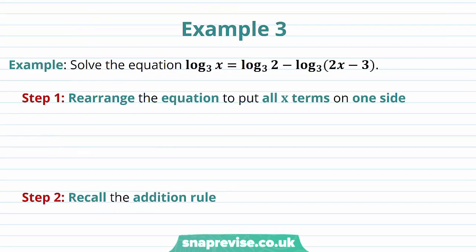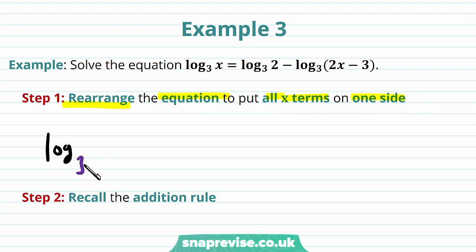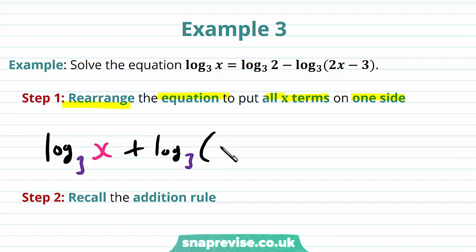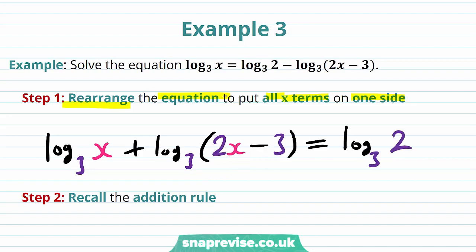Our last example asks us to solve the equation log base 3 of x equals log base 3 of 2 minus log base 3 of 2x minus 3. Our first step is to rearrange the equation to put all x terms on one side. So we're going to have the log base 3 of x and we can bring across the log base 3 of 2x minus 3. And this will be equal to the log base 3 of 2.